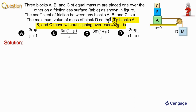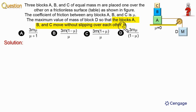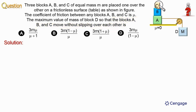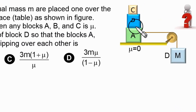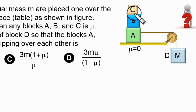In this question, this line is important: blocks A, B and C move without slipping over each other. It means the system of blocks A, B, C is moving together — there is no slipping between A and B, or between B and C.